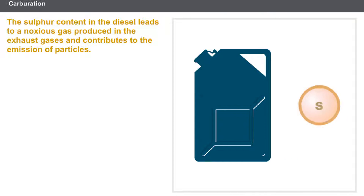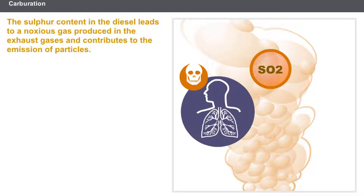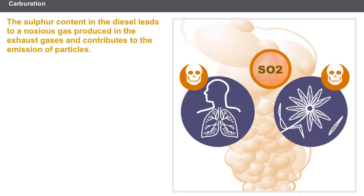Diesel fuels contain sulfur. The sulfur content of diesel fuels depends on the grade of the crude oil and the additives. At the point of combustion inside the engine, the sulfur is transformed into sulfur dioxide, SO2. The noxious level of this gas causes a reduction in the sulfur content of the diesel fuel. A low sulfur content also reduces the emission of particles.